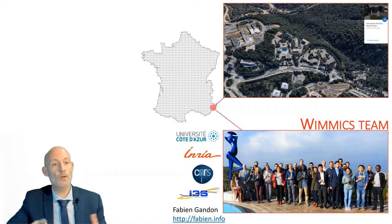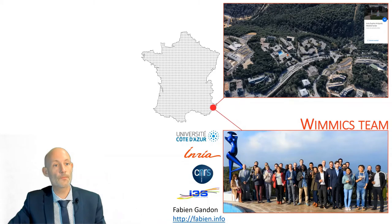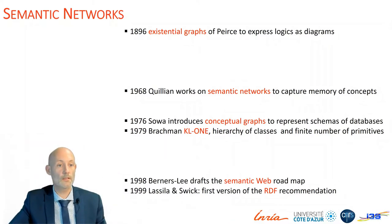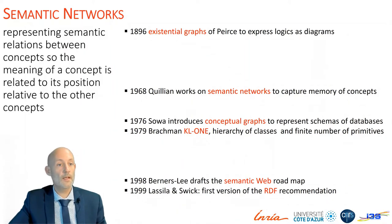For this talk I wanted to consider the idea of the convergence between very different types of complex networks. The first type of networks I wanted to mention is semantic networks. Their history could start with existential networks of peers, then Killian in the 60s coins the notion of semantic networks to capture the memory of concept. Then come conceptual graph, KL1, and in the late 90s semantic web and RDF. Semantic networks are networks that represent semantic relation between concepts, so the meaning of a concept is related to its position relative to the other concepts.